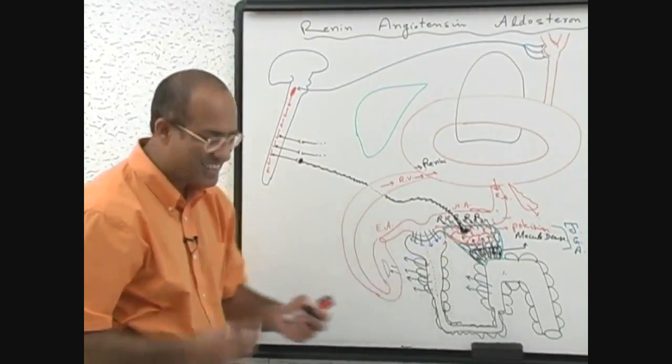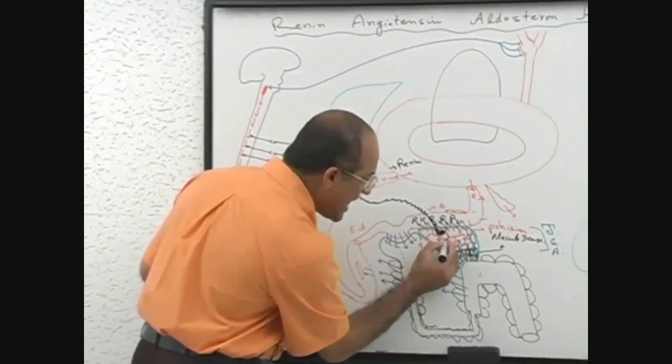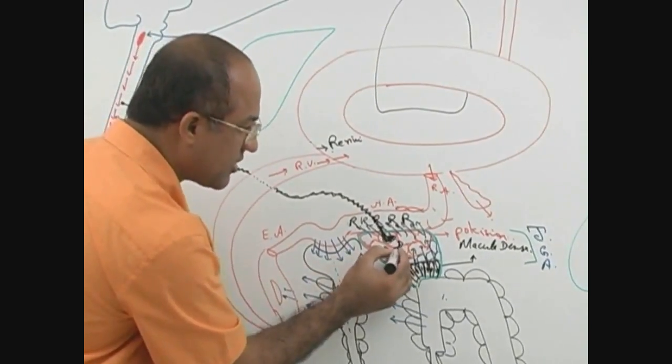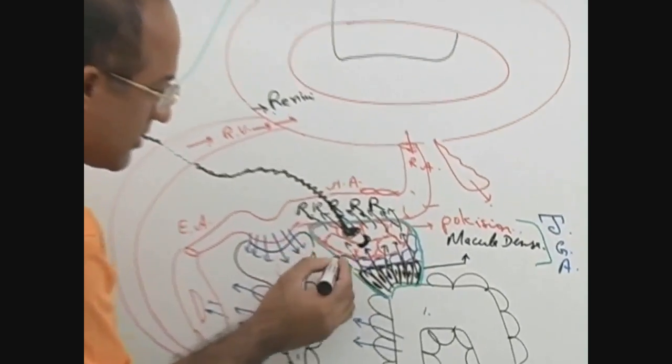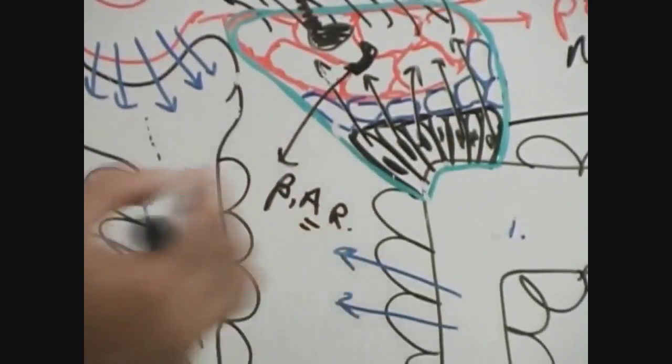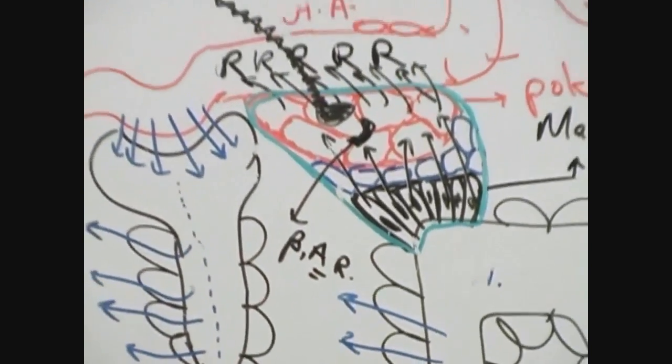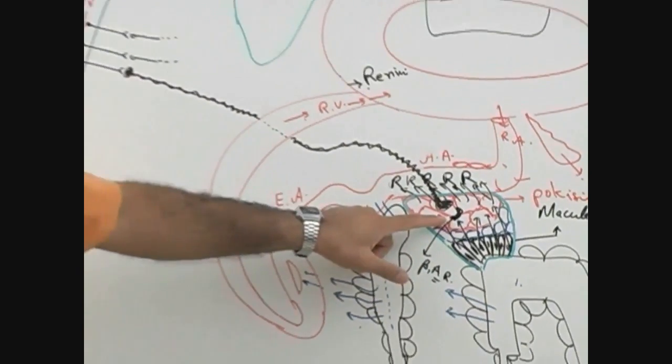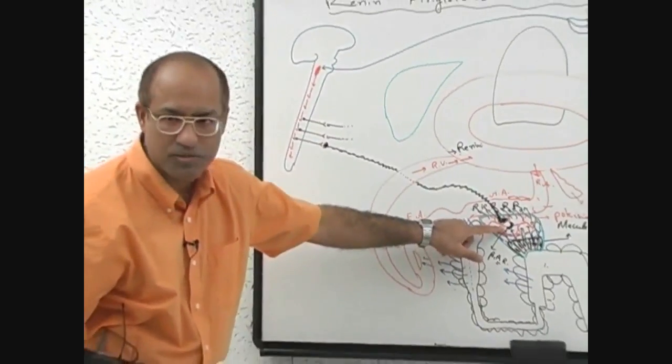These cells have receptors for norepinephrine - beta-1 adrenergic receptors. You must know there are beta-1 adrenergic receptors present on juxtaglomerular apparatus because beta blockers block them also and help us in hypertension management.